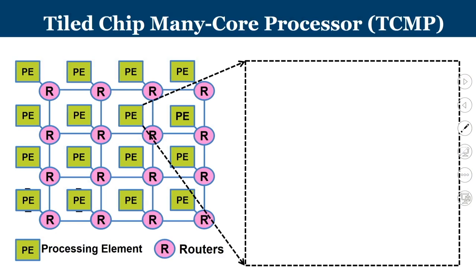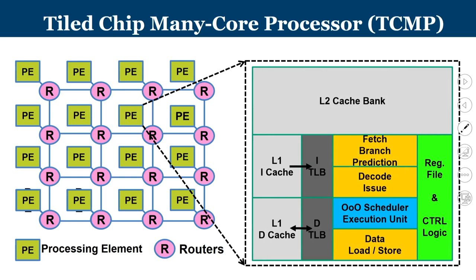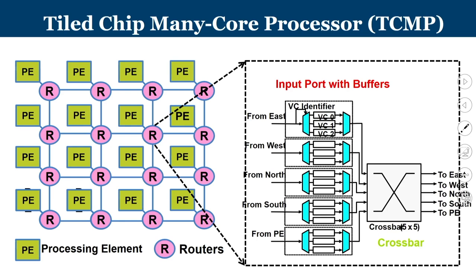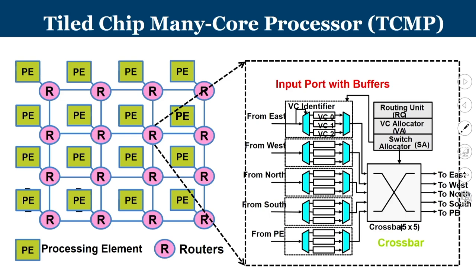This is the broader block diagram of a 16-tile many-core processor. We will learn about processing elements consisting of processors and first and second level caches. The course will detail the instruction pipeline — fetch, decode, issue, scheduling, execution, and data access — covered in Part A. Part B covers L1 and L2 cache memory architectures, and Part C covers the interconnect used as the communication framework, including network on chip routers consisting of buffers, crossbar, and control logic.